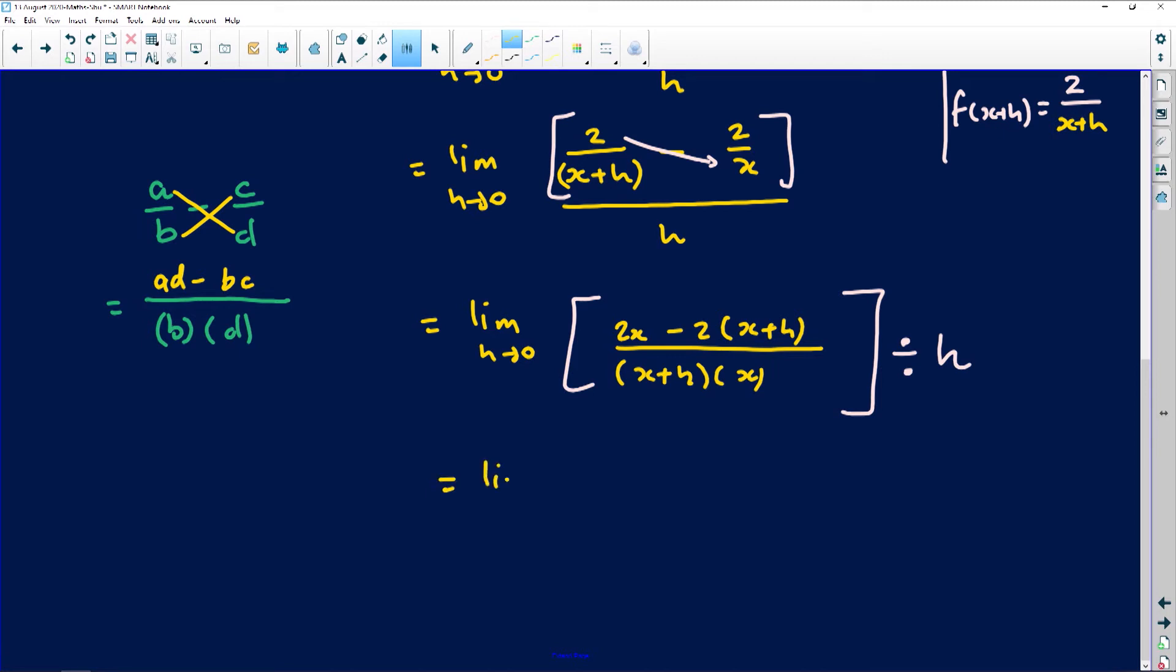So which will then amount to the limit as h approaches 0 of 2x minus 2x minus 2h all over. But don't break this one of x plus h times x. If you did, there wouldn't be any difference. Change division to multiplication, then it's going to be 1 over h.